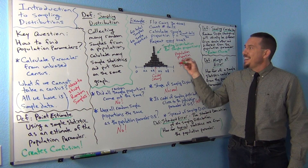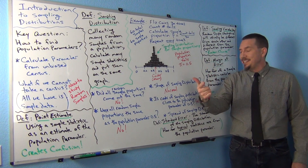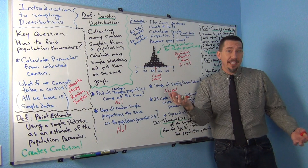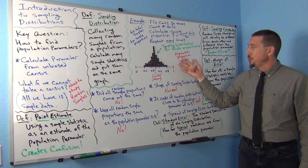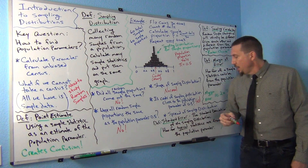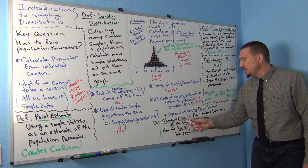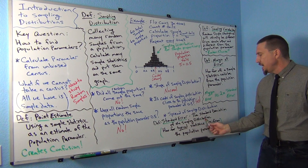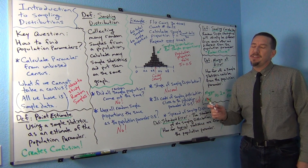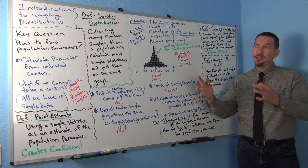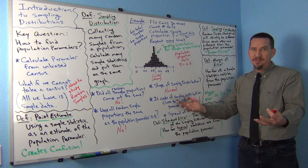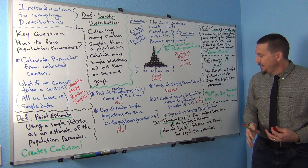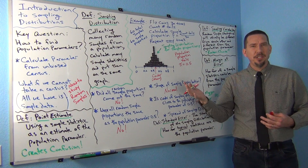So in analyzing data we want the shape, the center, and the spread. The spread for normal data was the standard deviation. So it makes sense that if I'm going to measure the spread of the sampling distribution, I'd want to use the standard deviation. We have a special name for that — it's called the standard error. Standard error refers to the standard deviation of the sampling distribution. It's not the standard deviation for one data set; it's the standard deviation that corresponds to thousands of data sets.